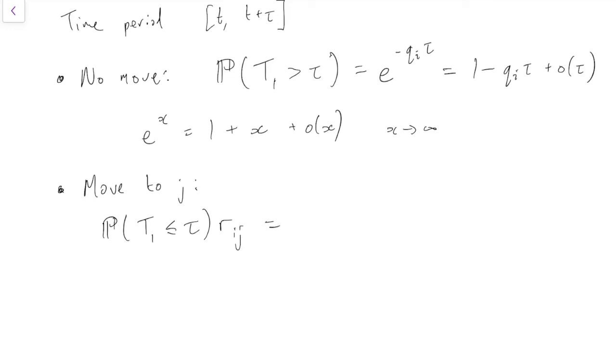The probability that we do move is 1 minus the probability we didn't move, which is just qi*tau plus little o(tau).